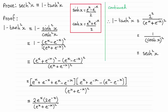That leads me to this result here. Then, put it over a common denominator of (e^x + e^(-x))².